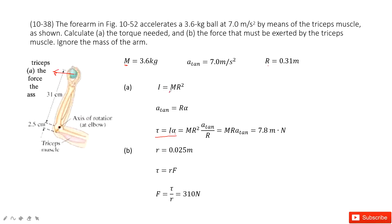How can you find I? Easy — because this is a ball. This is the fixed point, and the distance between the ball and the fixed point is r, so I equals mr squared. And for alpha, it tells you the tangential acceleration equals r times alpha.